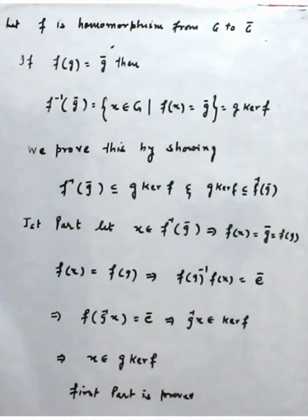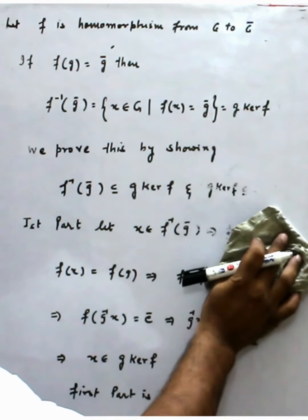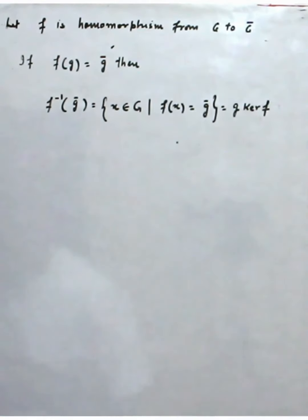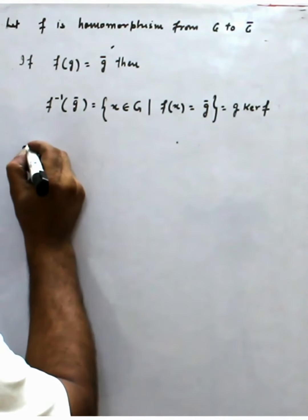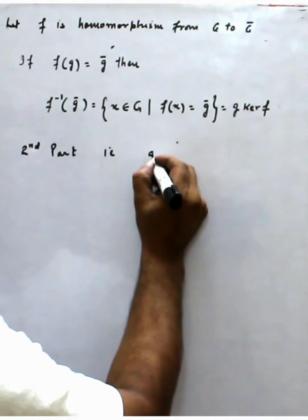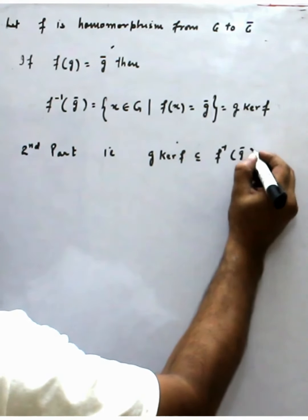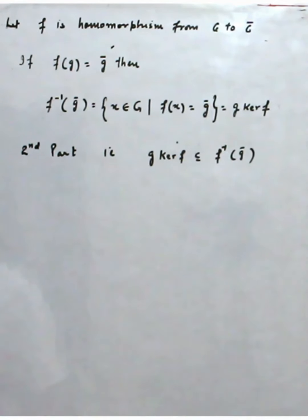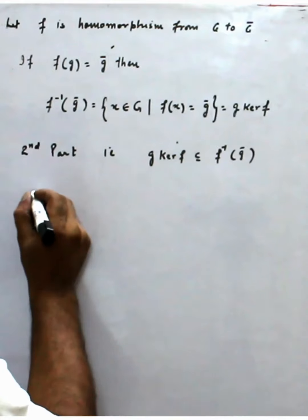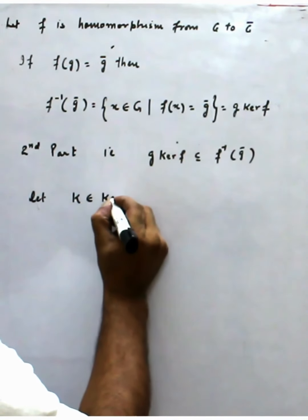Now we prove the second part: gKer(f) ⊆ f-inverse(ḡ). We have to show this. So let some element k belong to Ker(f).